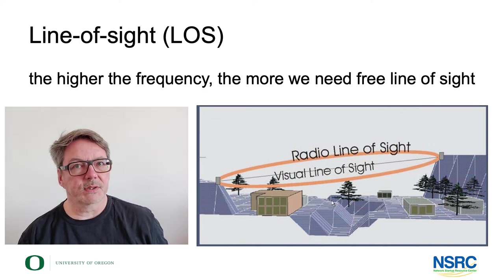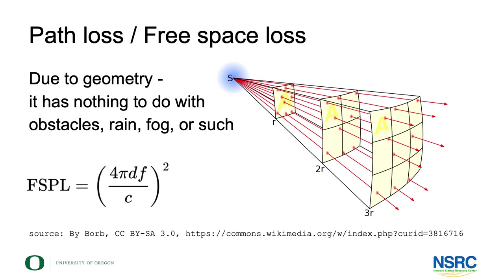If we have line of sight — no obstacles, no mountains, trees, or buildings — the loss of signal along the way is described by free space loss, also called path loss. It's pure geometry: you produce an output power at some point, and this power needs to spread and fill a larger and larger area. The further you go, the less power per surface unit you receive, simply because the power needed to spread out.